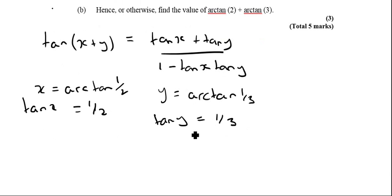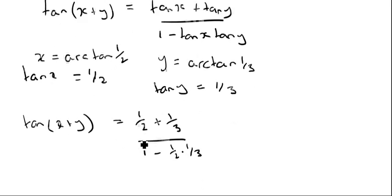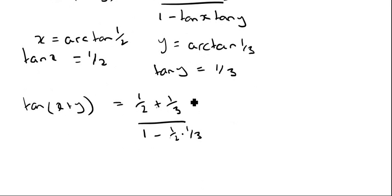So once we've got that little trick, we can now work out tan(x+y). That's going to be equal to 1/2 plus 1/3 over 1 minus 1/2 times 1/3. And if we do work all that out, we find that equals 1.